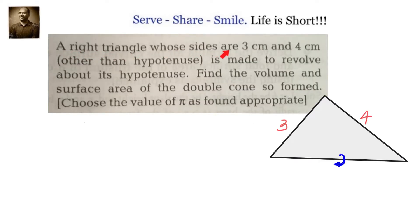A right triangle whose sides are 3 centimeters and 4 centimeters is made to revolve about its hypotenuse. Find the volume and the surface area of the double cone so formed. Choose the value of π as found appropriate. We have a right triangle with sides 3 and 4 forming a right angle there and the hypotenuse is 5 centimeters.